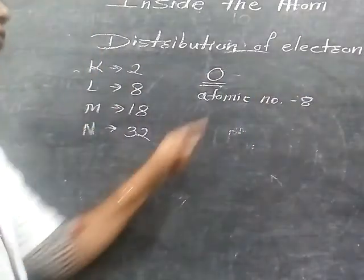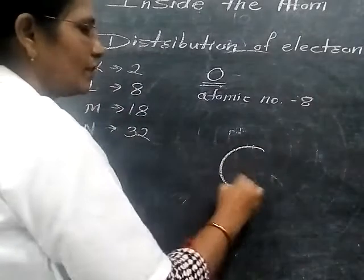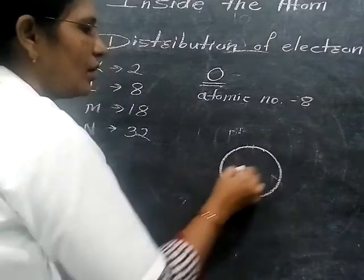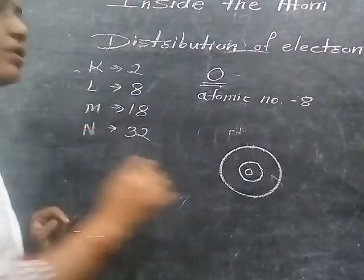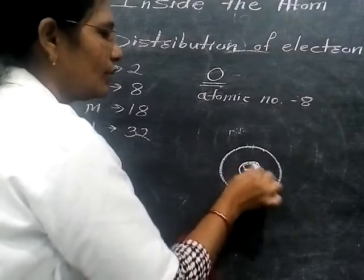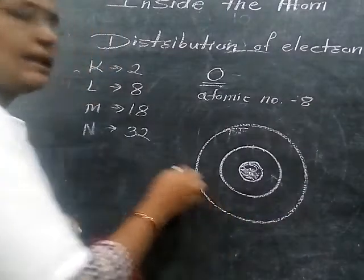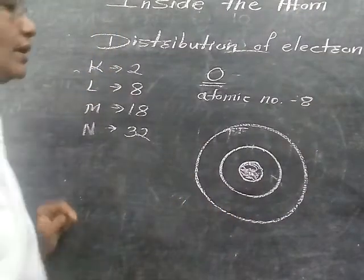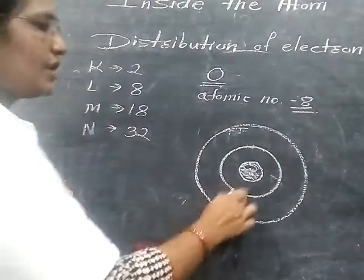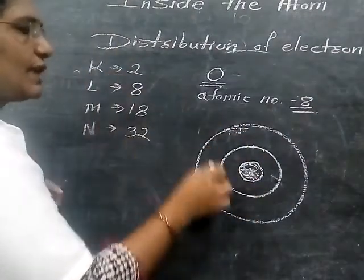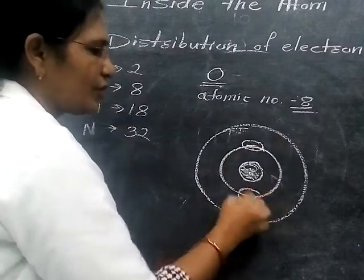Now we draw the electronic configuration for oxygen. All mass is concentrated at the nucleus. We are going to distribute the electrons in the orbits. The total number of electrons is 8. In the first shell, the capacity of the K shell is 2 electrons, so we put 2 electrons in the first shell.